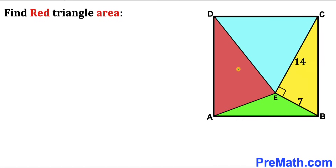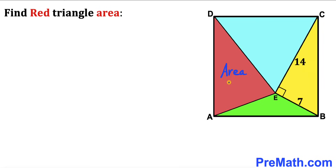Welcome to pre-math. In this video we have got four different triangles fully confined in a square ABCD. The yellow triangle is a right triangle since this angle is 90 degrees, with side length EB equal to 7 and side length EC equal to 14 units. Our task is to calculate the area of the red shaded triangle.